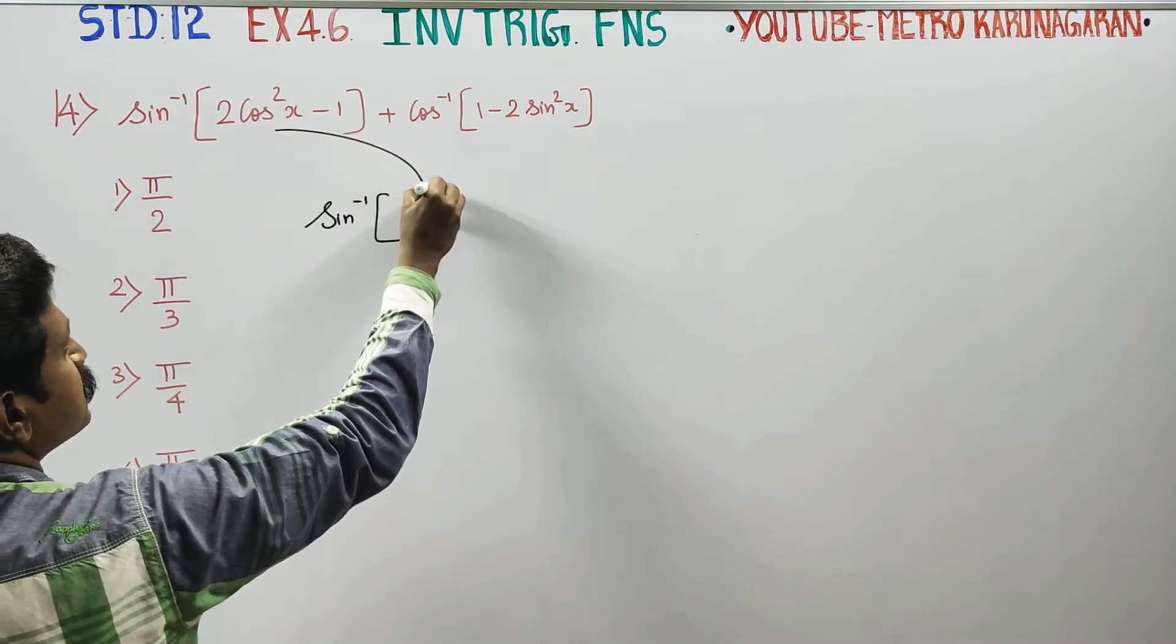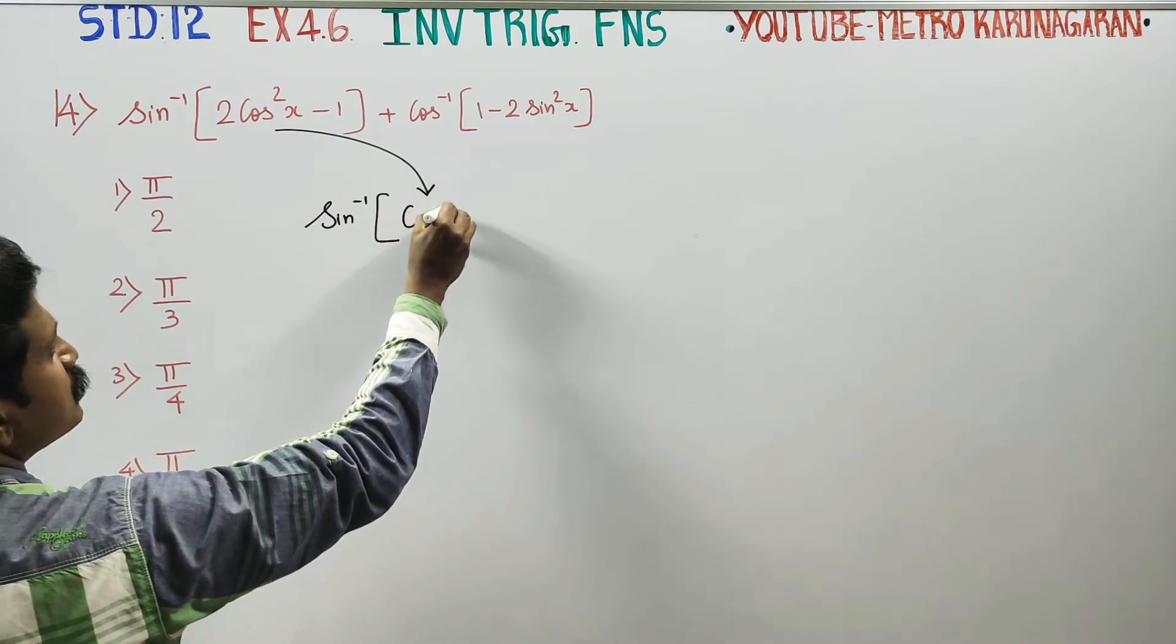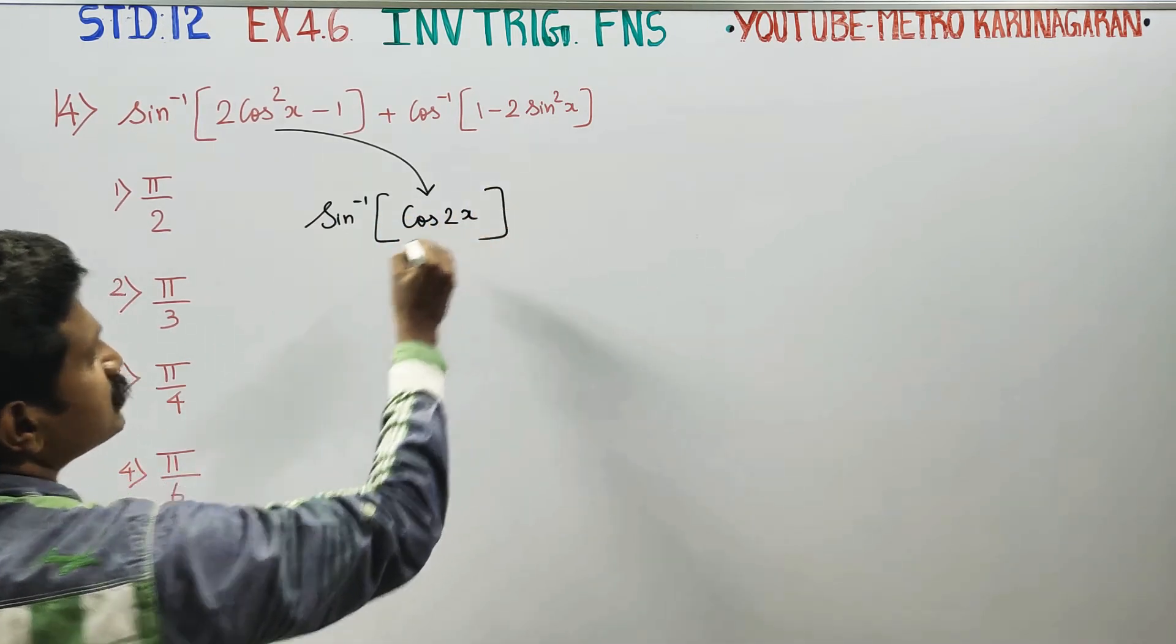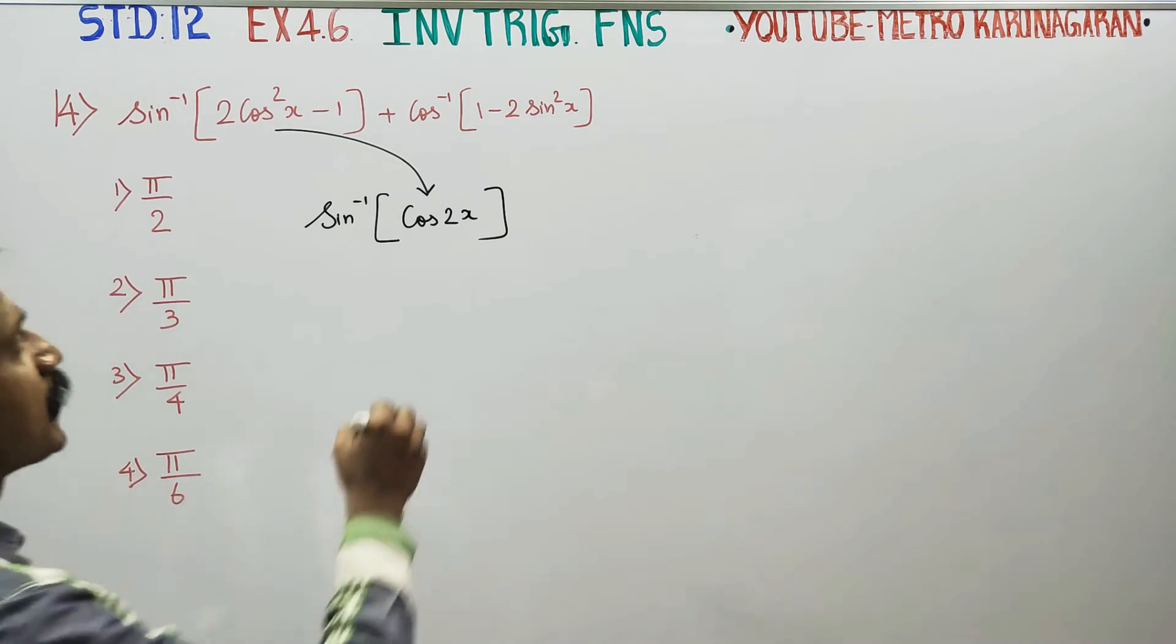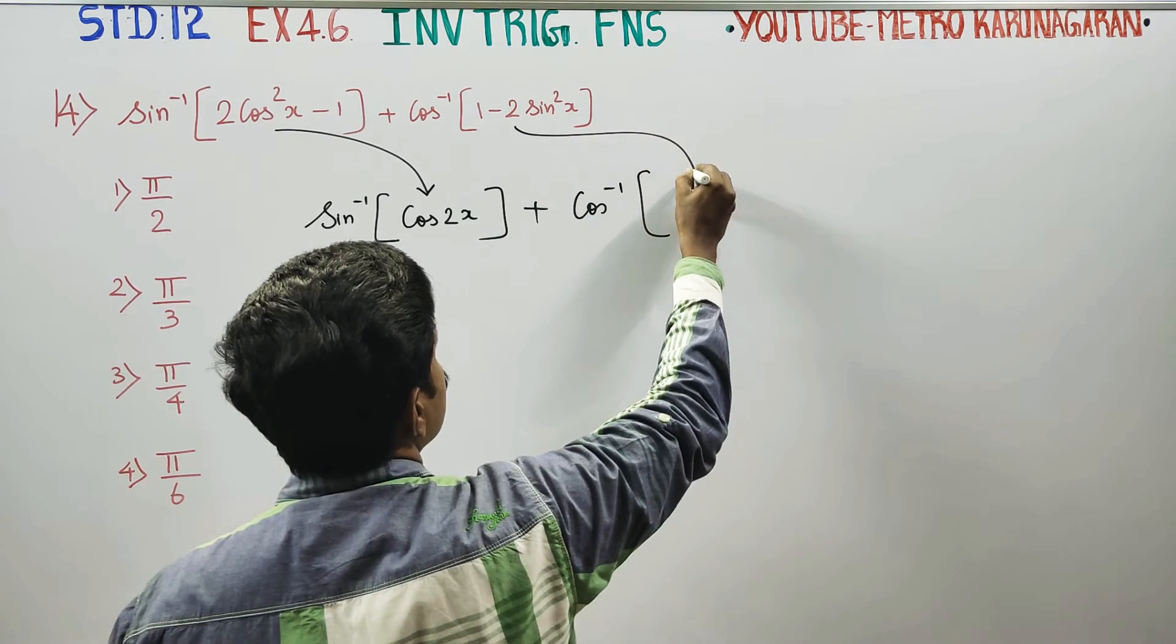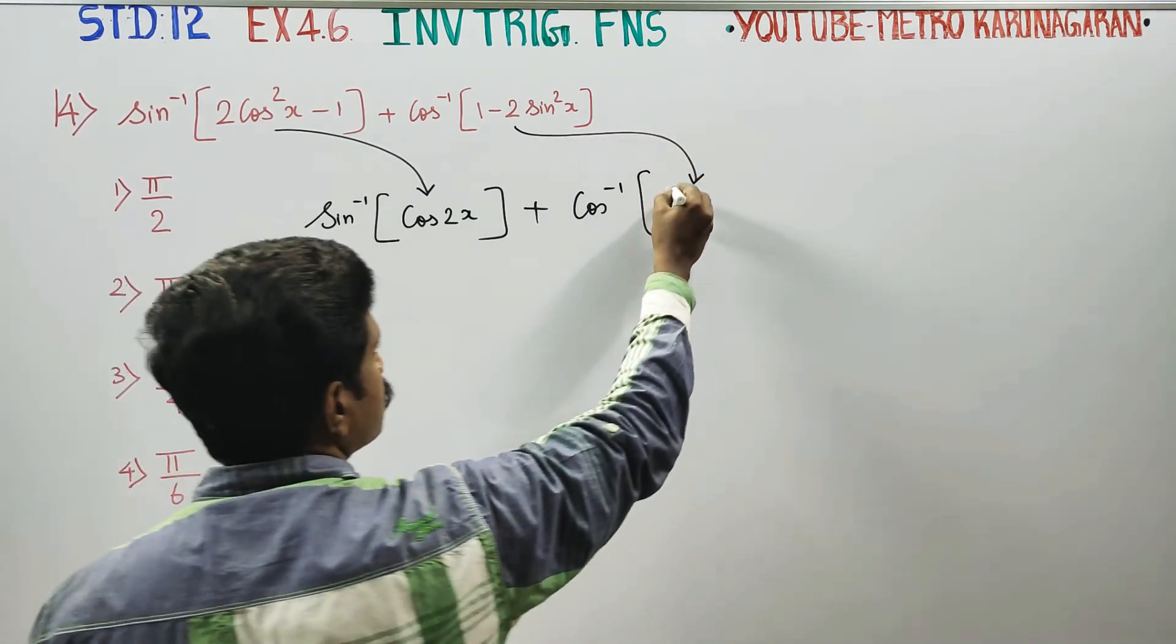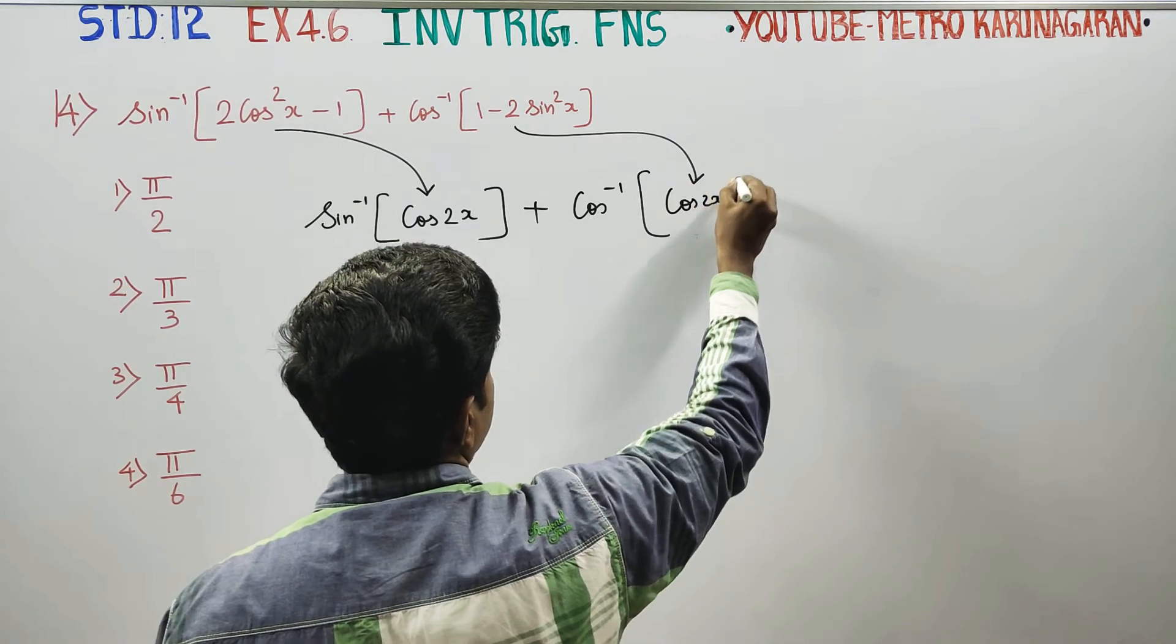2 cos²x minus 1 is the double angle formula, this is the cos 2x formula. Plus cos inverse of 1 minus 2 sin²x is also a double angle formula, this is also the cos 2x formula.